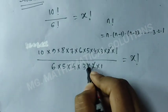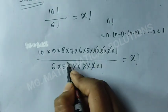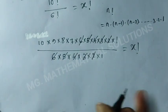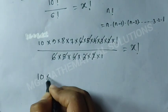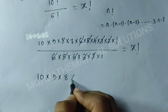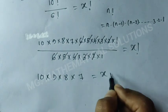2 cancelled, 3 cancelled, 4 cancelled, 5 cancelled, 6 cancelled. So here 10 times 9 times 8 times 7 equals x factorial.